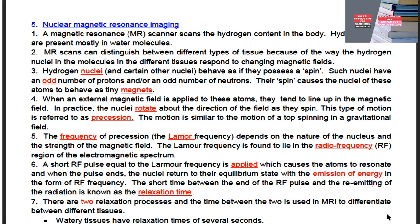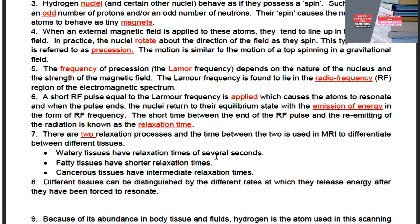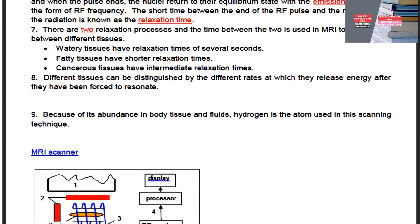There are two relaxation processes and the time between the two is used in MRI to differentiate between different tissues. Watery tissues have relaxation times of several seconds, fatty tissues have shorter relaxation times, and cancerous tissues have intermediate relaxation times. Different tissues can be distinguished by the different rates at which they release energy after being forced to resonate — you can tell whether a region is muscle or fat by looking at the different relaxation times. Because of its abundance in body tissue and fluids, hydrogen is the atom used in this scanning technique.